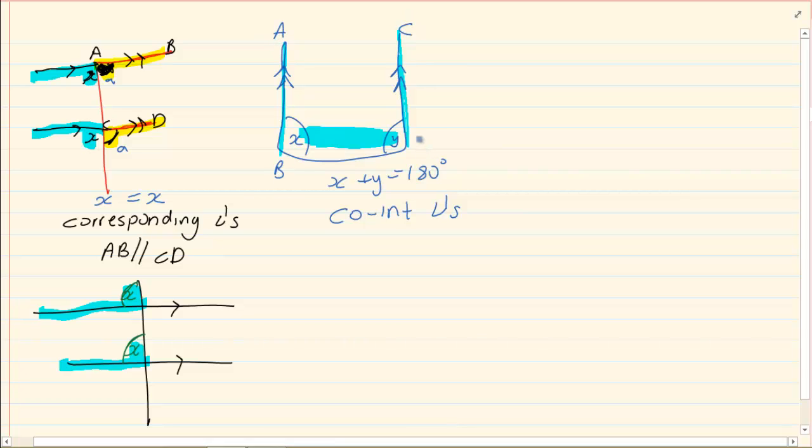Again, it's a good idea to write down which parallel lines are we talking of. AB is parallel to CD.